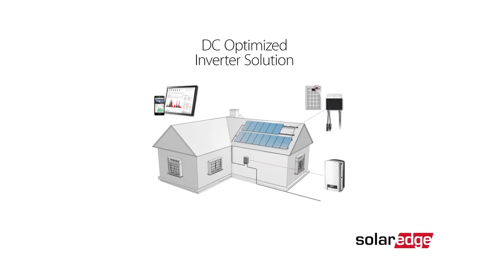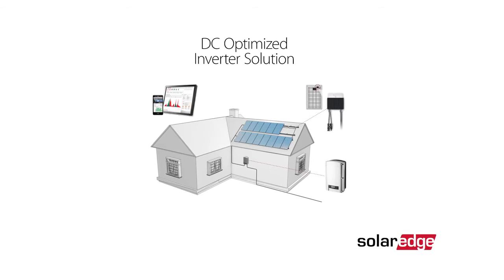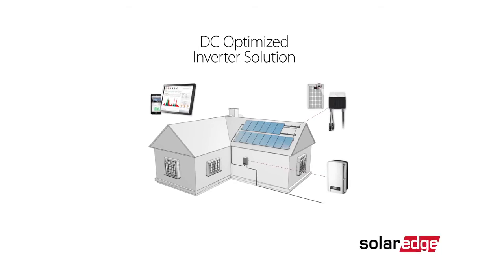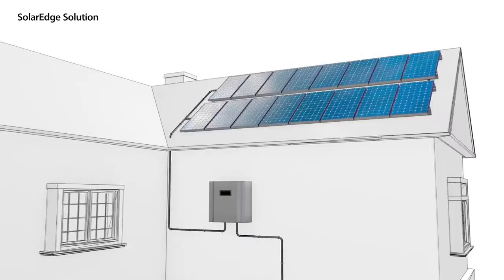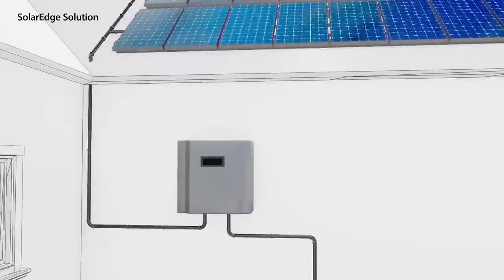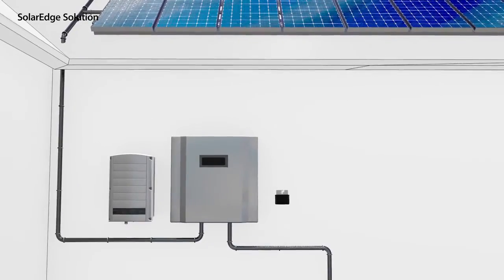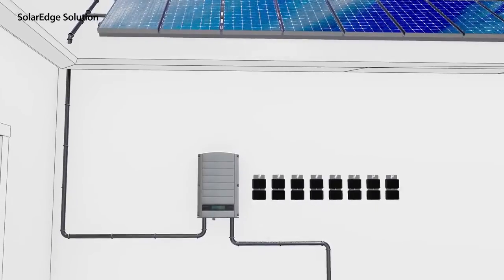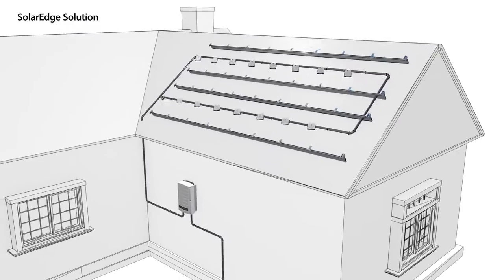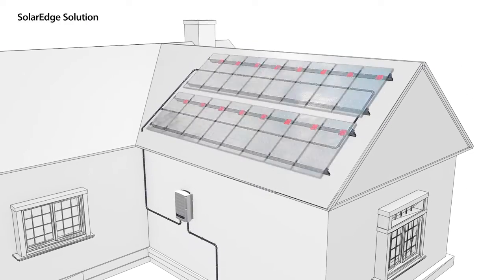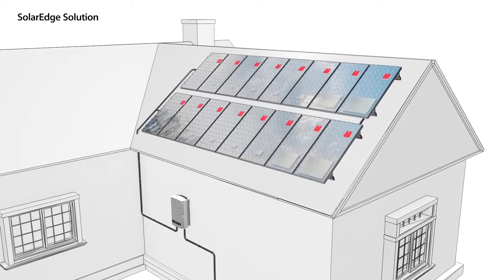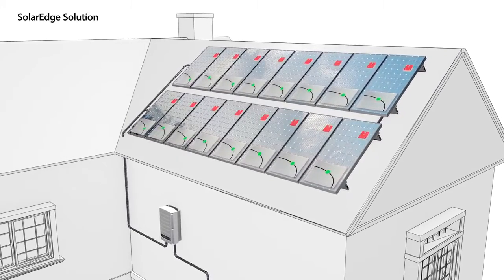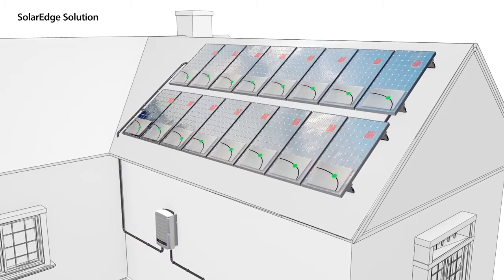Eventually, we developed a topology that meets all of these goals. The SolarEdge DC-optimized inverter topology combines the best of both worlds. Our solution splits the traditional inverter functionality into two products: the power optimizer and a simplified inverter. The power optimizers are located on each panel, turning the panels into intelligent panels. These power optimizers provide panel-level tracking and real-time adjustments of current and voltage to the optimal working point of each individual panel.